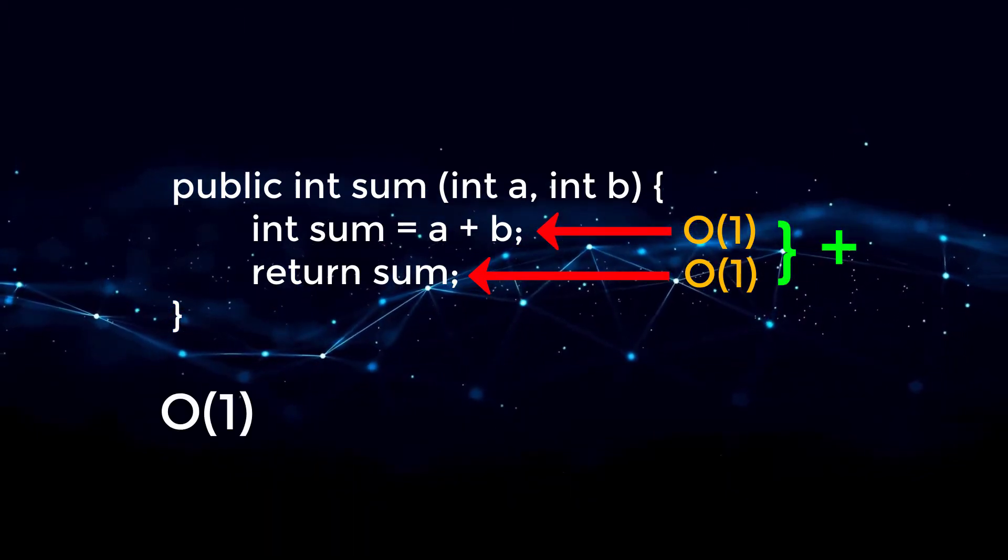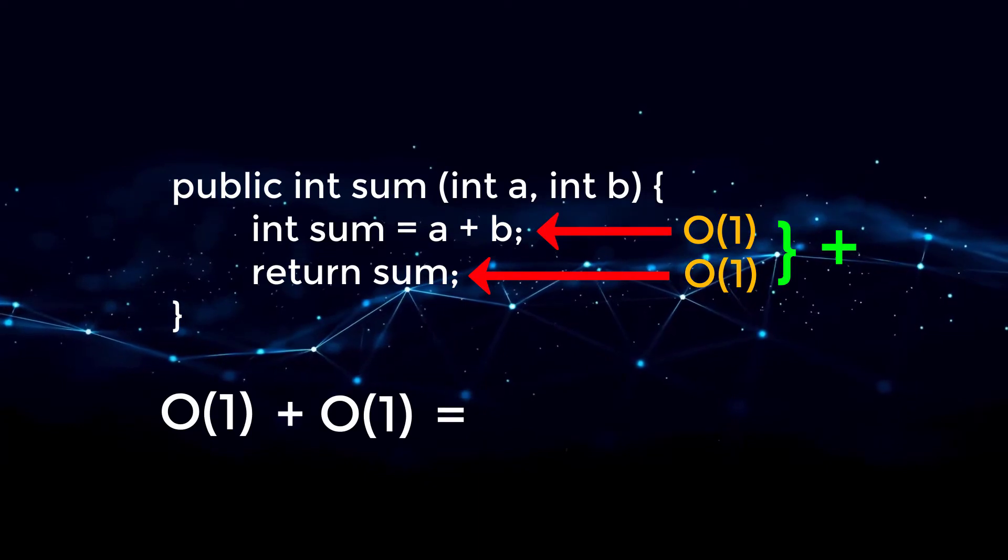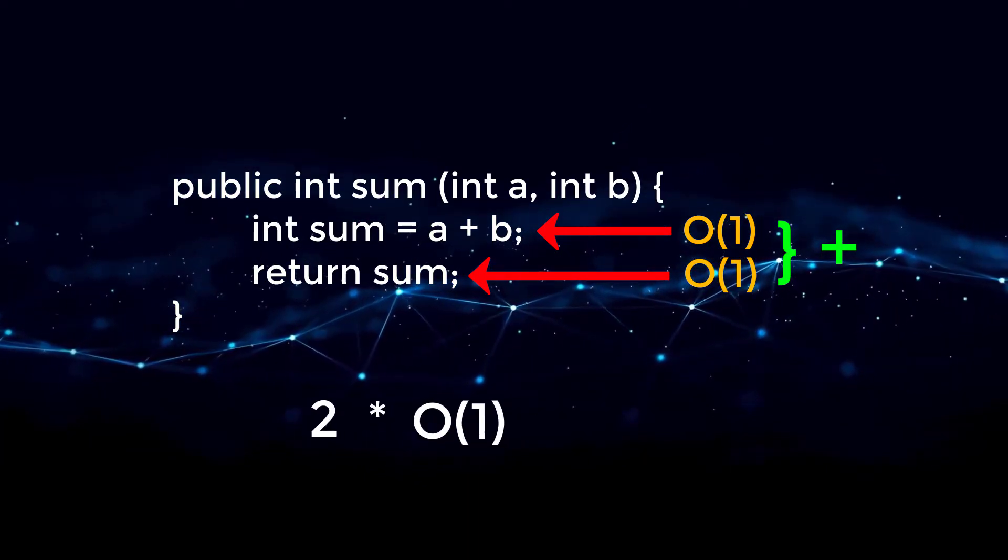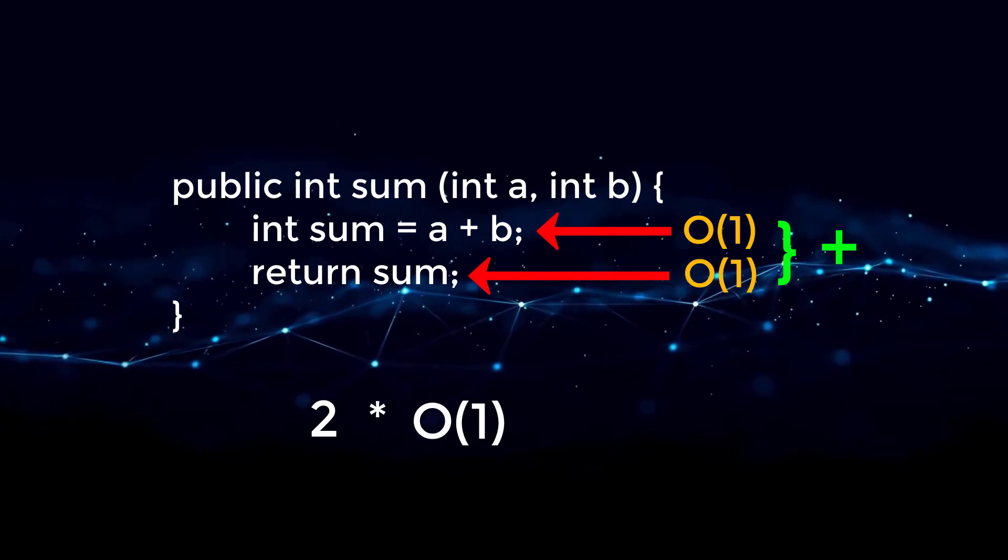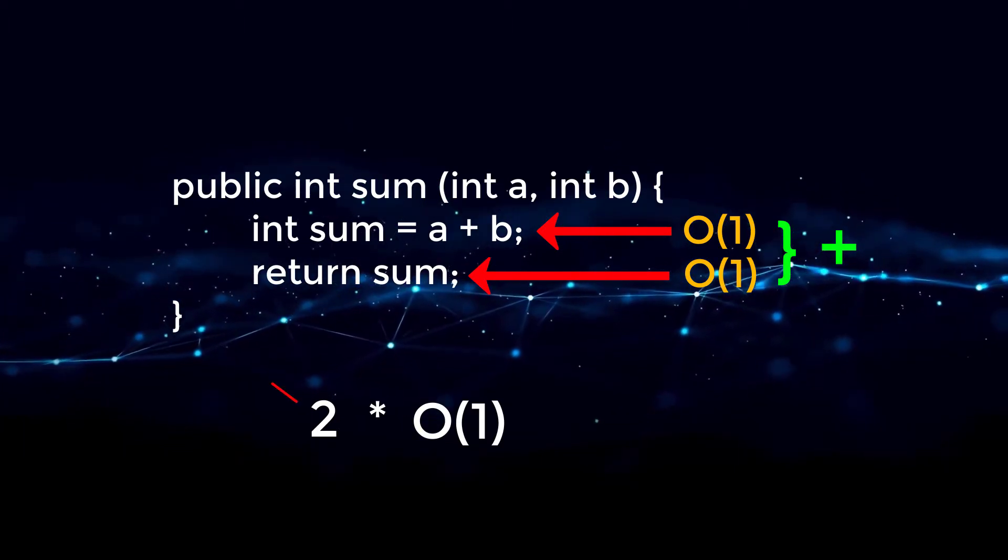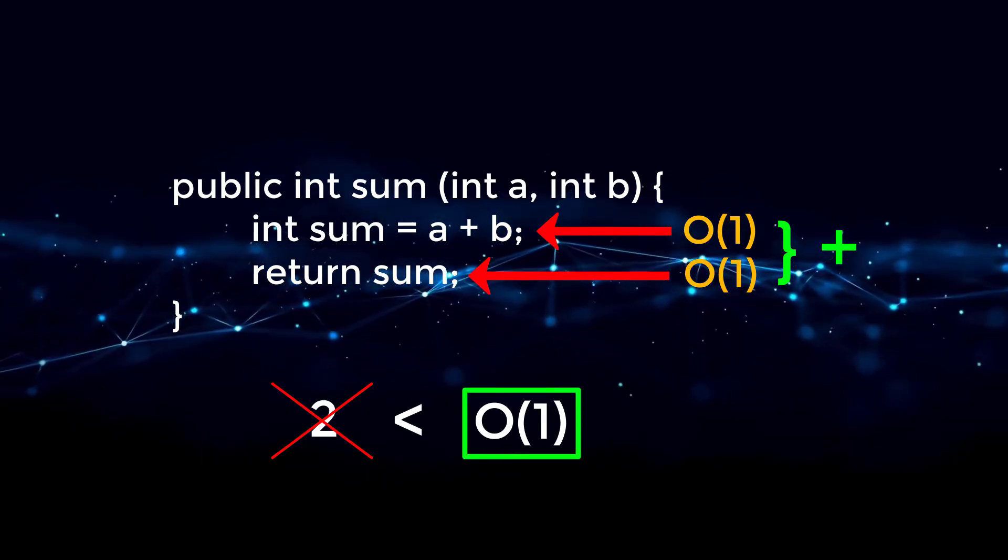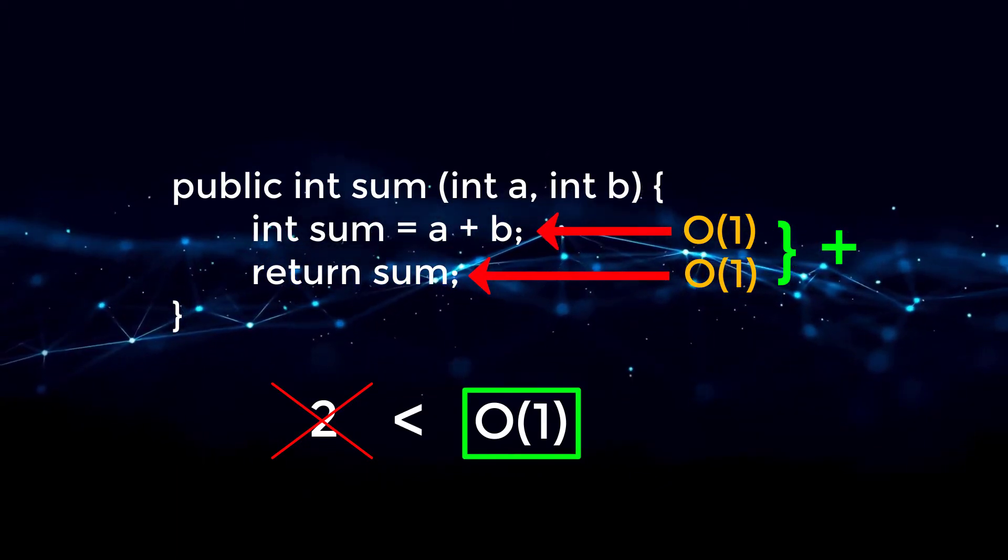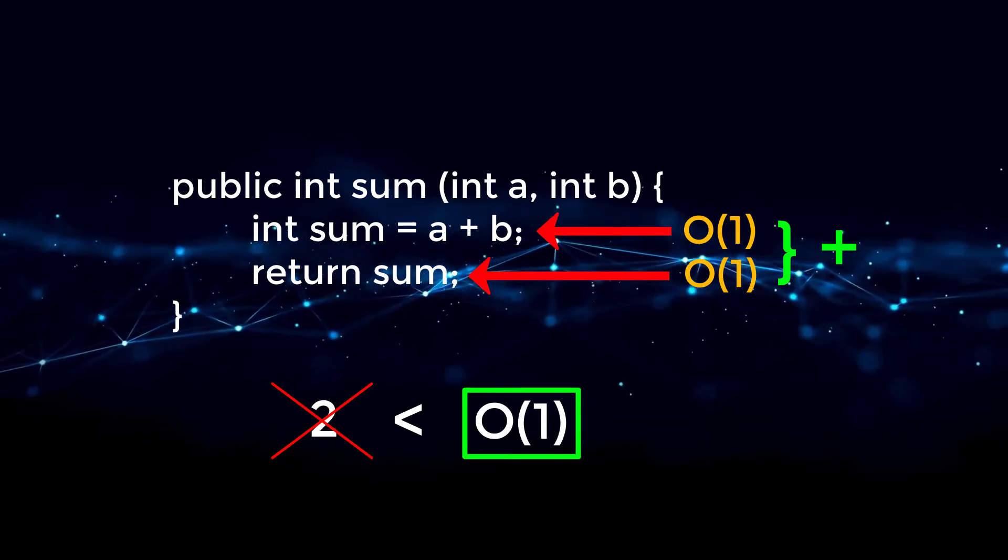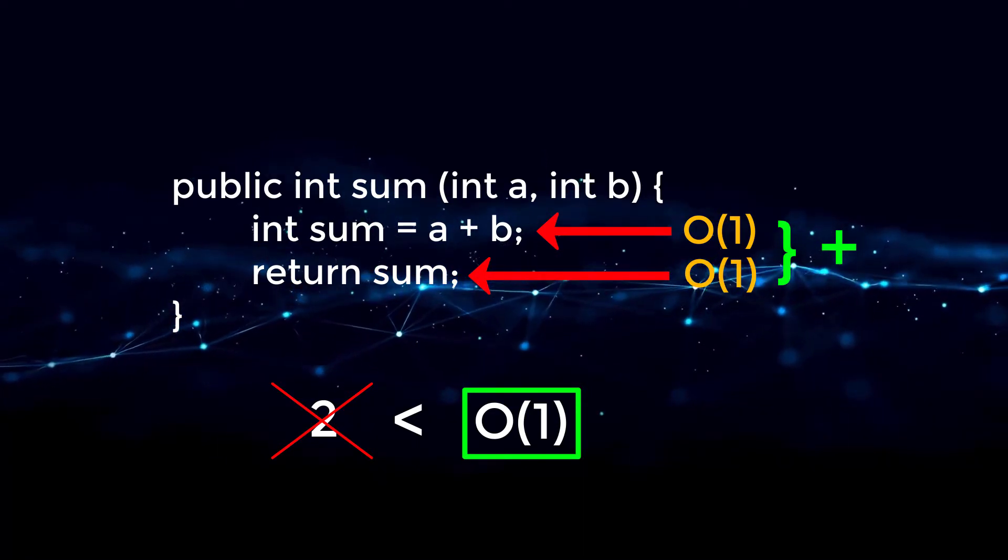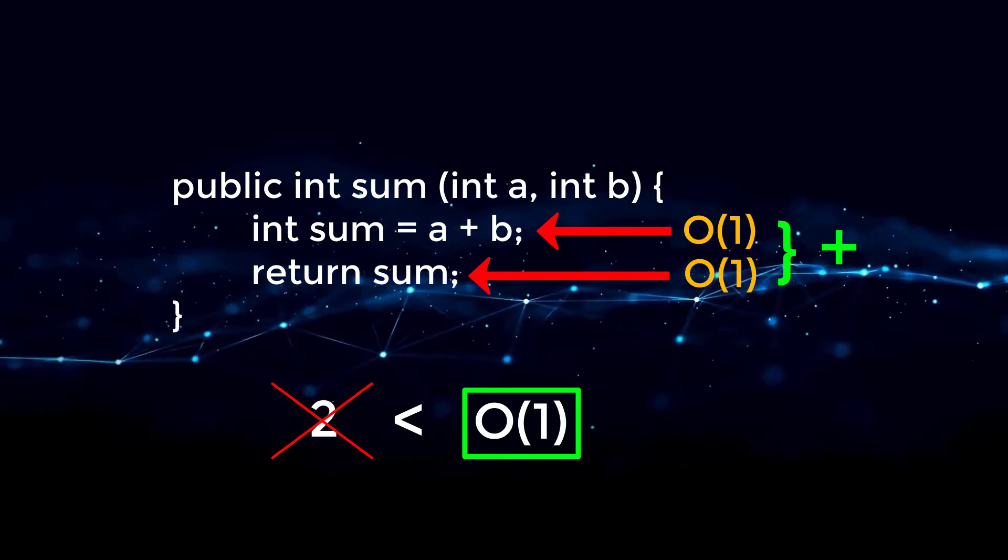So Big O of one plus Big O of one is two times Big O of one, and this leads to a very important step when writing Big O notation. We are always going to drop constants, and this is because we always take the biggest term to describe the algorithm, and I'm going to explain more on this later. So we're going to cut off the two, and we are just left with Big O of one. So the entire function is a constant time complexity algorithm.